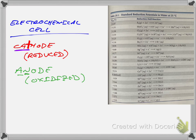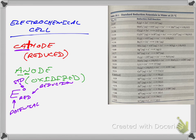We come up with standard reduction potentials, which are again relative to the baseline of zero. The notation uses the capital E symbol with a subscript 'red' because we're talking about the reduction potential — the potential for the half reaction actually being reduced — and the superscript naught represents standard conditions, usually room temperature and pressure.